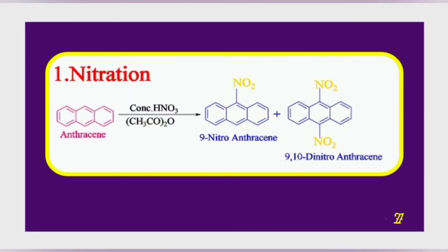When anthracene is reacted with concentrated nitric acid in the presence of acetic anhydride, a mixture of 9-nitroanthracene and 9,10-dinitroanthracene is obtained. In this reaction, concentrated sulfuric acid is not used because it oxidizes anthracene to anthraquinone.